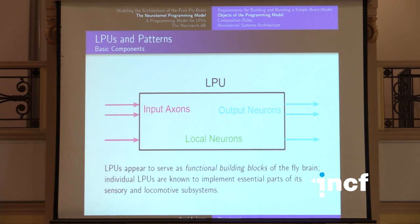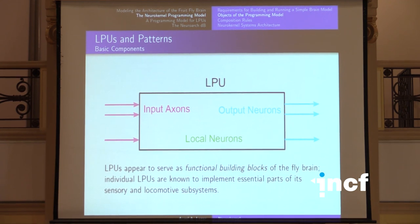The message I have as a result is that there are three important things in this field: programming models, programming models, and programming models. Similar to what people say in real estate — location, location, location — we say everything is about programming models. I'm going to discuss programming models at various levels of abstraction, in particular at the architectural level and at the LPU level.